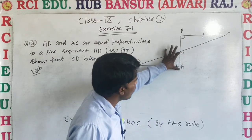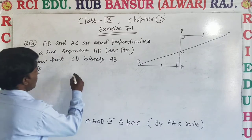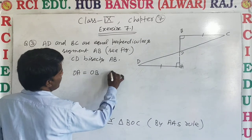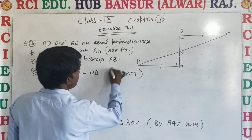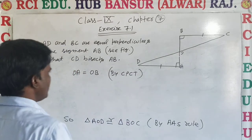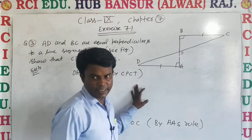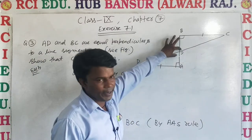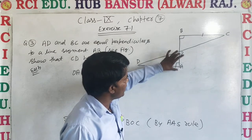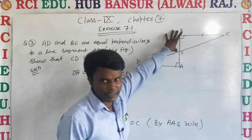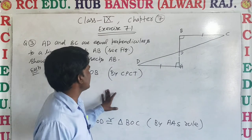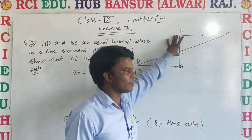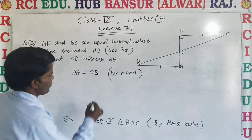By CPCT, we can say OA is equal to OB. Therefore, CD bisects AB at point O, since OA equals OB. Hence proved.